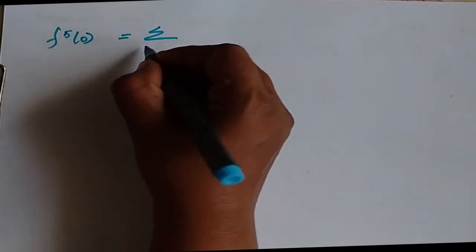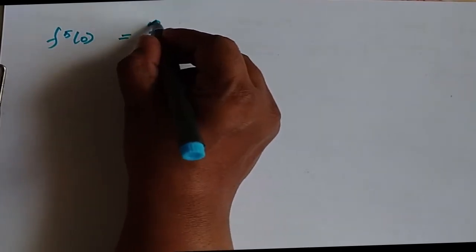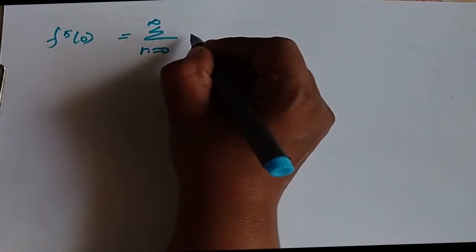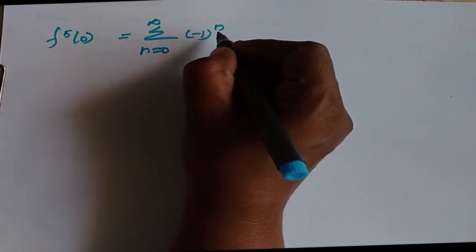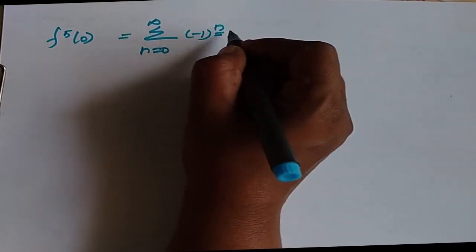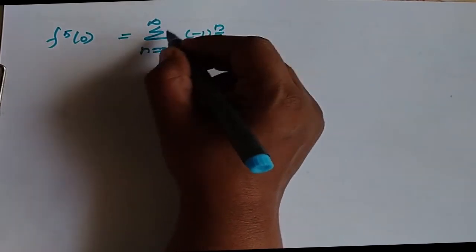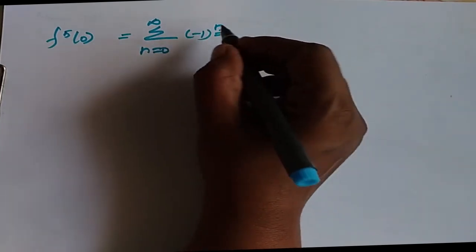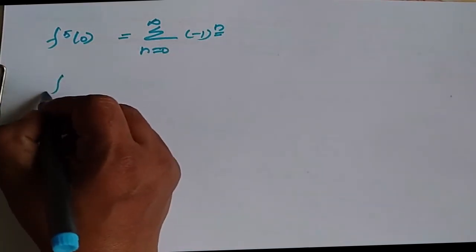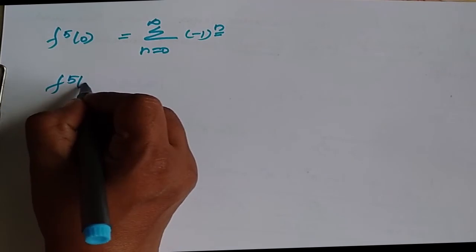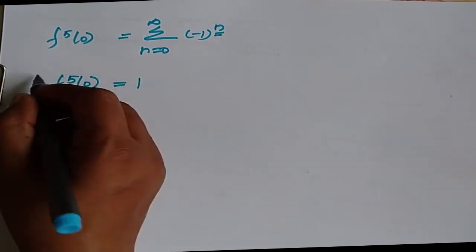For F5(0): substituting into the summation from n=0 to infinity of (-1)^n · x^(2n) and evaluating at x=0, we get F5(0) = 1.